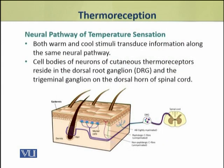The neural pathways of temperature sensation for both warm and cool sensation transduce information along the same neural pathways. The neurons of the thermoreceptors present in the skin have their nerve endings in the skin, but their cell bodies reside in the dorsal root ganglion (DRG) and trigeminal ganglion, and the dorsal horn of the spinal cord.